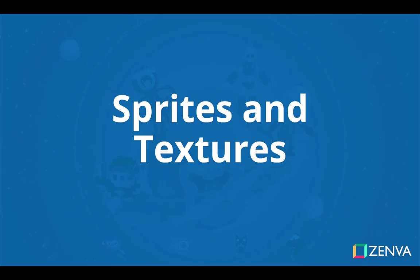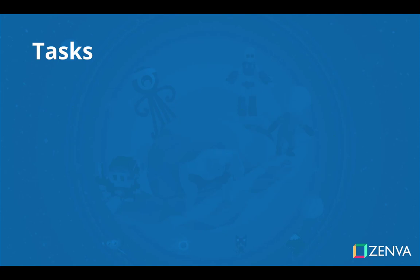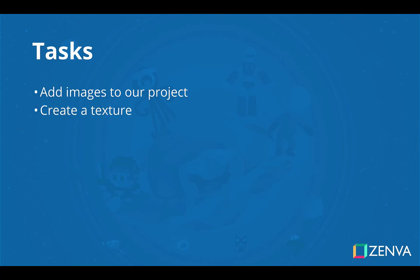Welcome to our tutorial on sprites and textures. Here we'll get a quick introduction into what sprites and textures are and how we can use them to display images in our SFML programs. The first task is to start up a new project and add some images into that project through an images folder. Then we'll create a texture and the corresponding sprite, and draw it to the screen. For those with experience with SFML and sprites, this will be pure review. If you're brand new to SFML, this will be a quick introduction. Let's head to our text editor and get started.